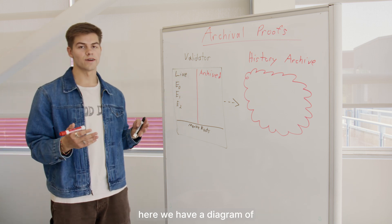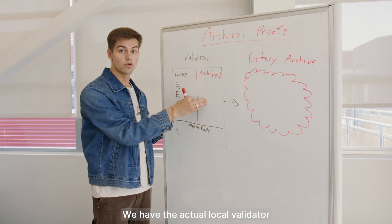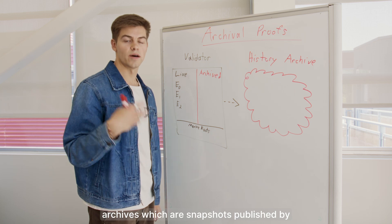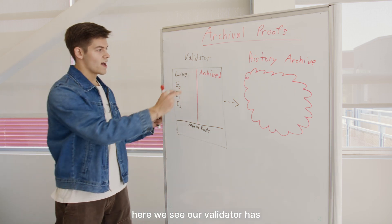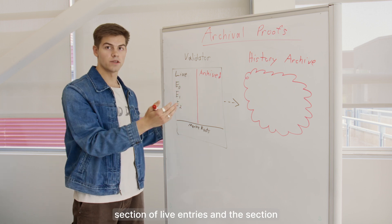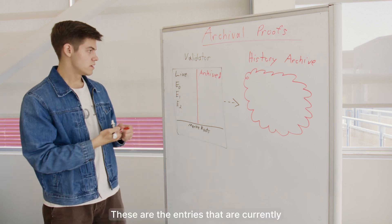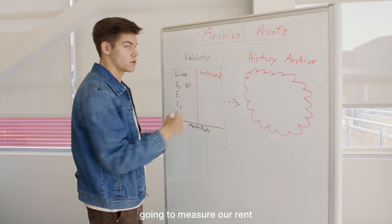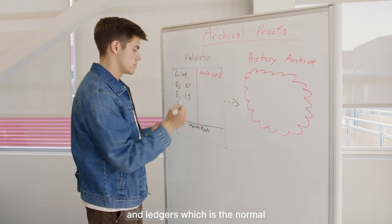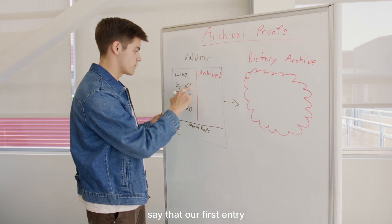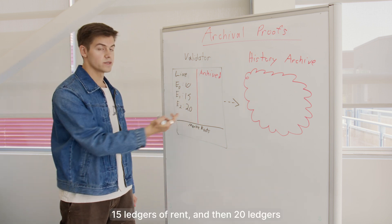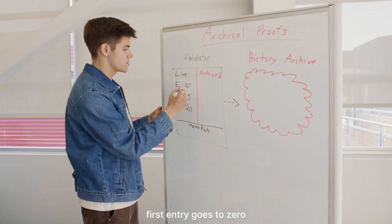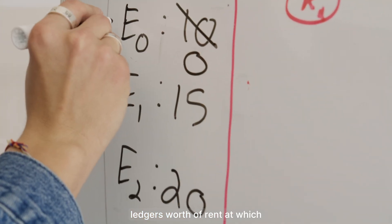Here we have a diagram of how a Stellar validator works. We have the actual local validator database here on the left, and on the right we have history archives, which are snapshots published by all tier one validators. Our validator has two different sections: the section of live entries and the section of archived entries. Each entry has some rent balance associated with it — we measure rent in ledgers, which is the normal time metric of a blockchain. So our first entry has 10 ledgers of rent, the second has 15, and the third has 20. As time goes on, eventually our first entry goes to zero ledgers worth of rent, at which point it's archived.